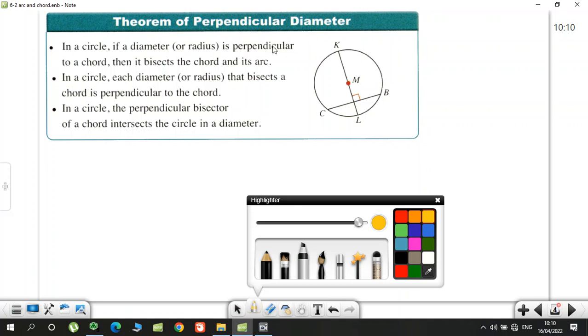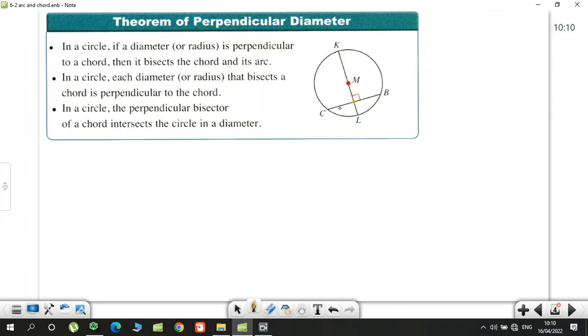In a circle, if the diameter or radius is perpendicular to chord, then it bisects the chord. So if radius or diameter perpendicular to chord, that means it's bisect. Bisect means from C to this point, these two will be equal. In a circle, each diameter that bisects chord is perpendicular. If it's bisected, that must be 90 degrees. In a circle, the perpendicular bisector of a chord intersects the circle in diameter. So if we draw a perpendicular bisector of CB, it must be passed through the center. That's the idea.